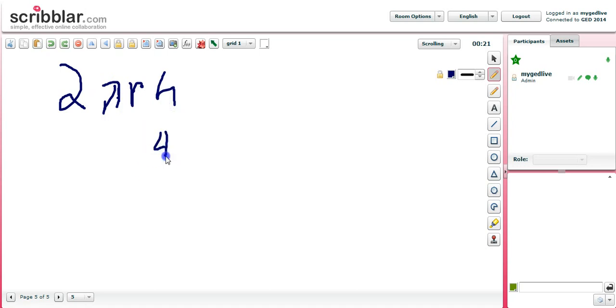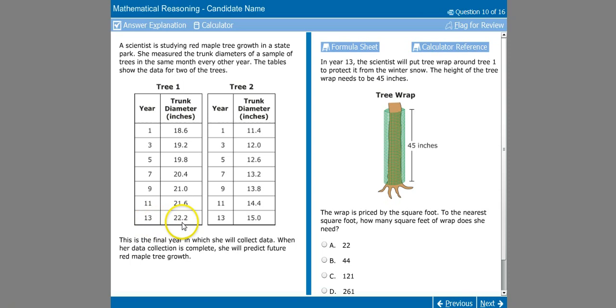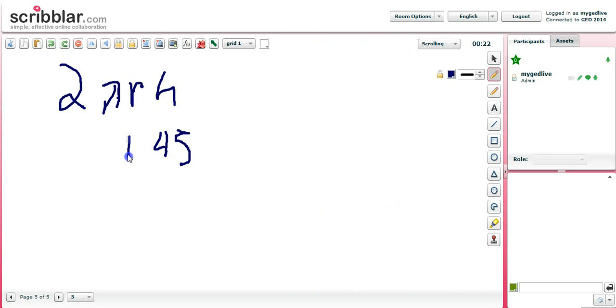We already know the height is 45, so we can go ahead and put that in. The radius, we have to go back and look at the data. The radius in year 13, actually the diameter is 22.1. So the radius is going to be half of the diameter, which is 11.1. So we're going to go ahead and put 11.1 in there and put a multiplication sign in there. And then pi we know is 3.14, a multiplication sign in there, and 2 times all those things. So we have 2 times pi 3.14 times radius 11.1 times height 45. And all that together gives us 3,136.86 as the surface area.